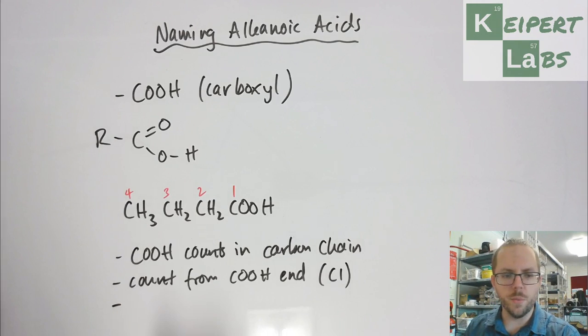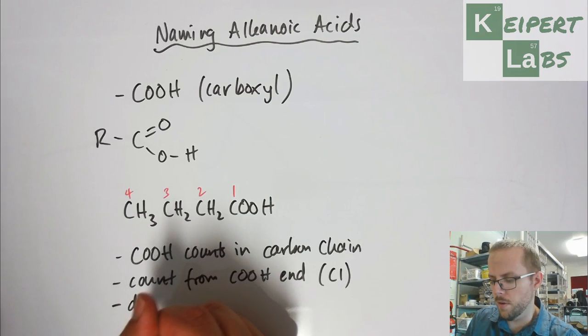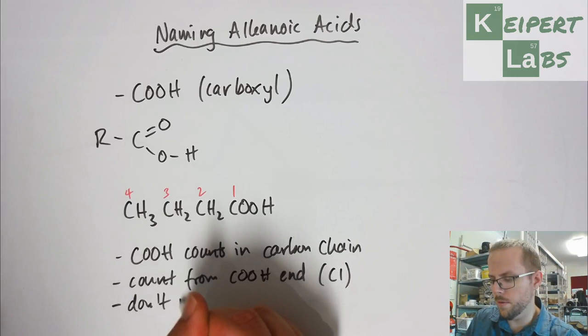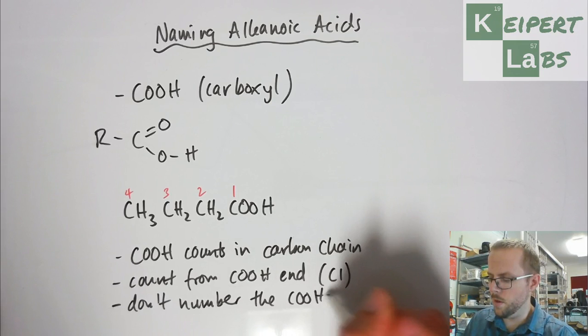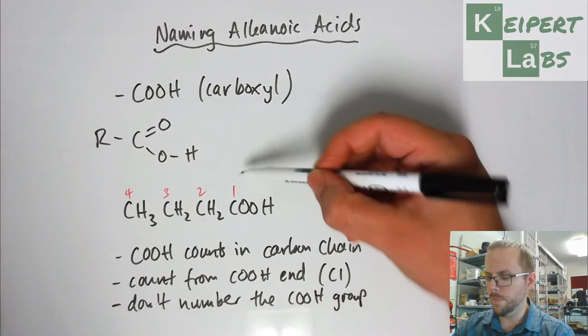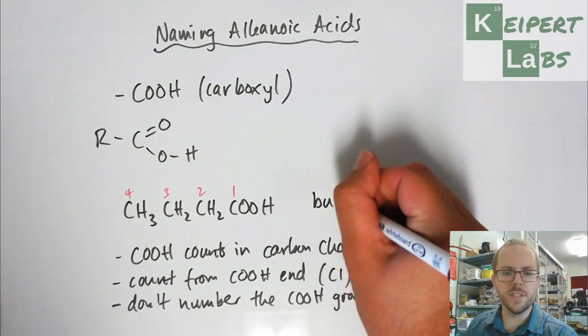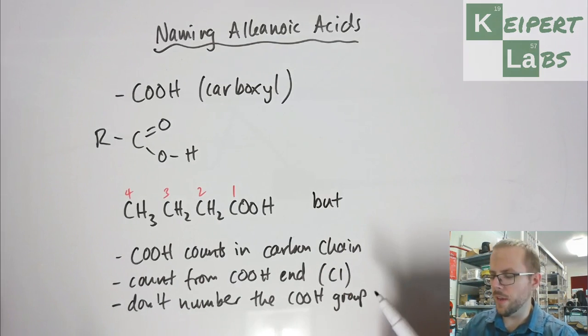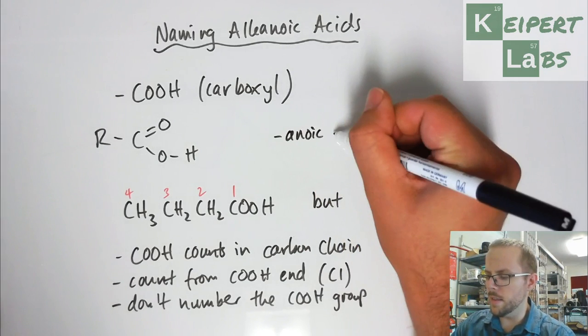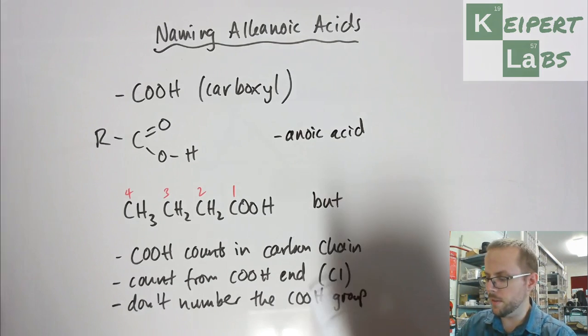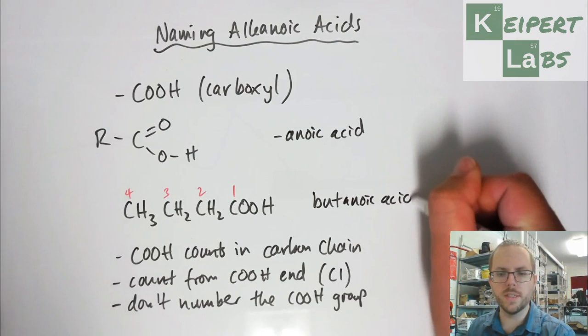The last thing we need to do, to make things easier, is that we don't number the COOH group. We would give it a number, but what we're going to see is: it's got four carbons, so it's got the prefix 'but'. Because it's an alkanoic acid, it has this particular suffix. So butanoic acid is what we would call this substance.